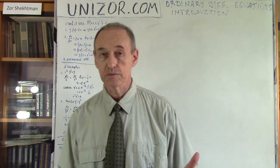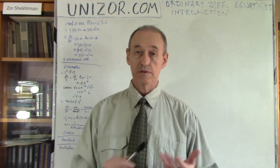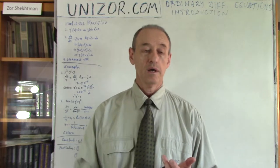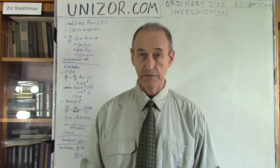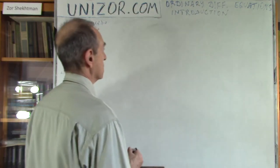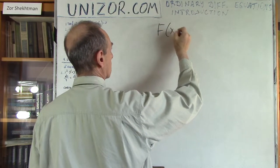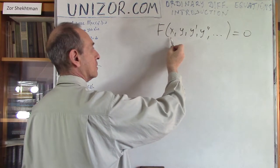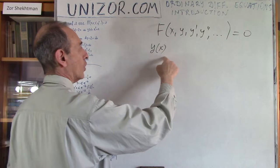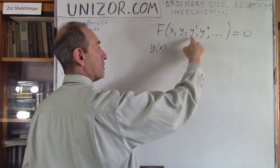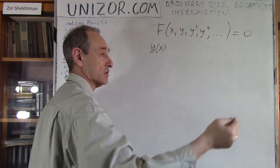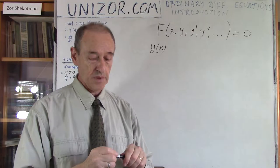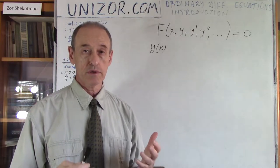Let's start with a definition. An ordinary differential equation is, first of all, an equation — which means there should be an equal sign. The fact that it is a differential equation implies that derivatives of the function participate. The most general form is a function of an argument, the unknown function of that argument, and its derivatives — maybe only the first, or maybe the first, second, and third, etc. — all participating in this equation.